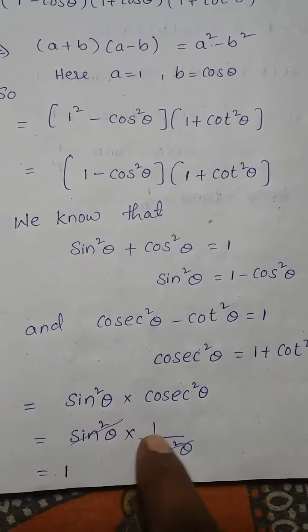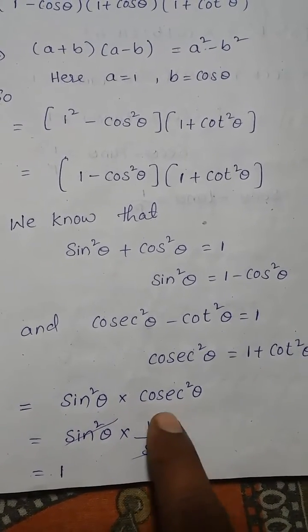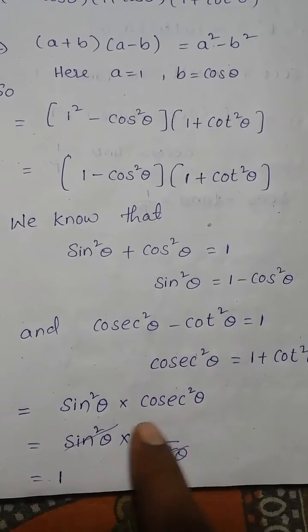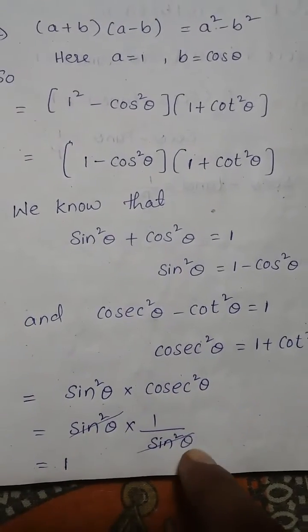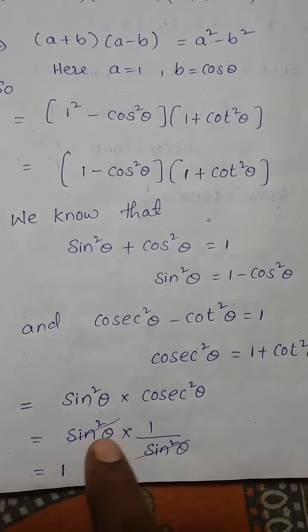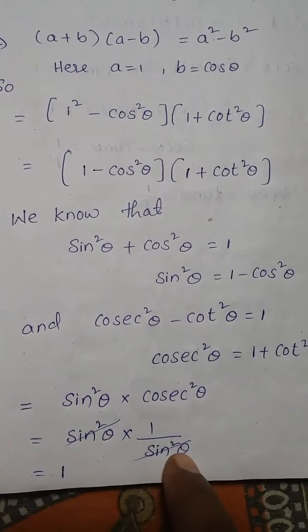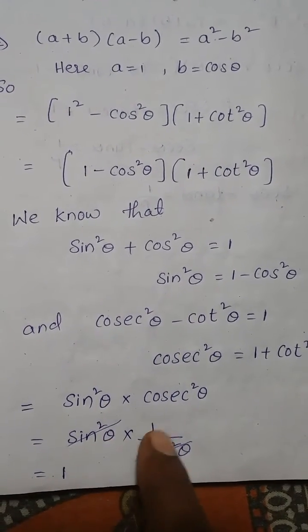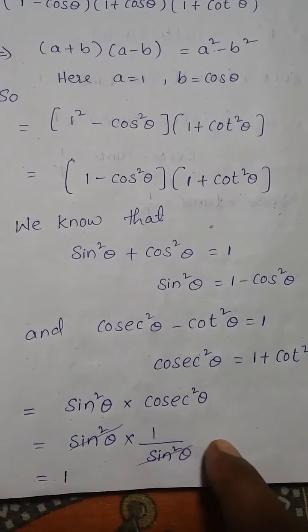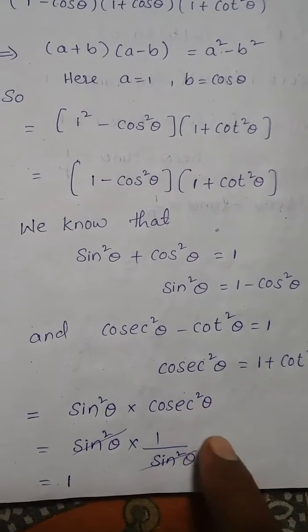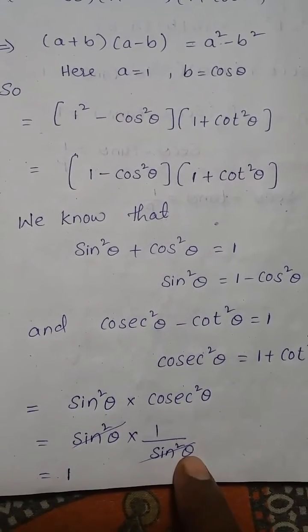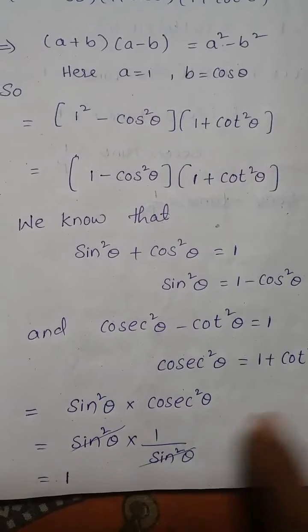Sin square theta into cosec square theta: the multiplicative inverse of cosec square theta is nothing but 1 by sin square theta. So sin square theta in the numerator and 1 by sin square theta in the denominator — both get cancelled, therefore the answer is 1.